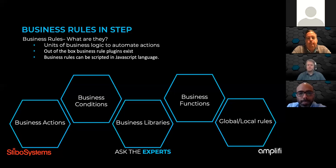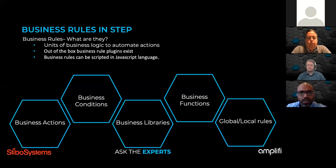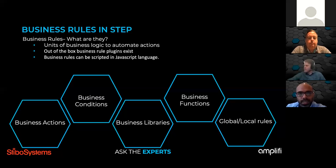A business library is used for reusability of business rules — basically a set of JavaScript functions that can be used in multiple places. Business functions are basic units of logic that produce an output from an input without affecting the state of data — they serve as helpers, allowing other functionality to delegate part of their logic to reusable business functions. There's also a concept of global versus local rules. A local business rule is tied to the workflow context — it cannot be used anywhere else. A global business rule, as the name suggests, can be used across different places.